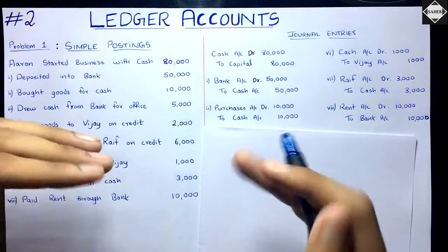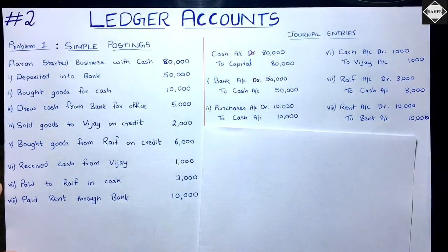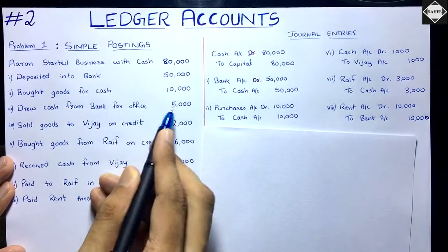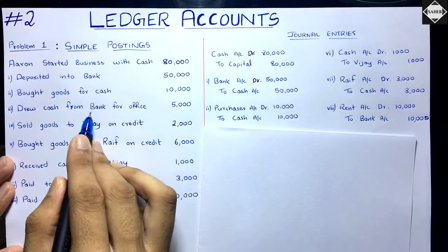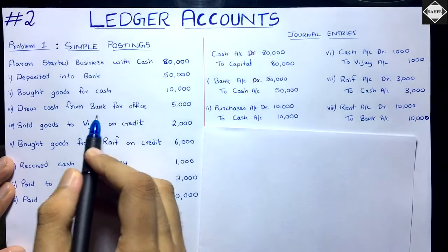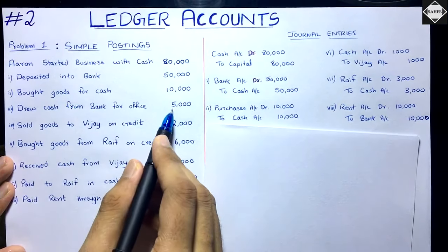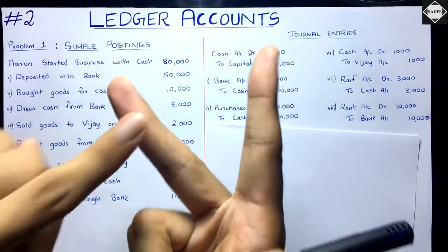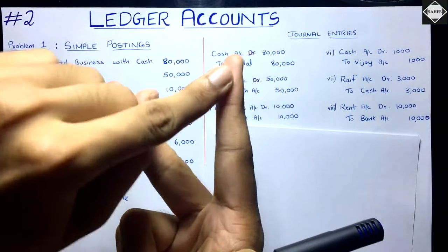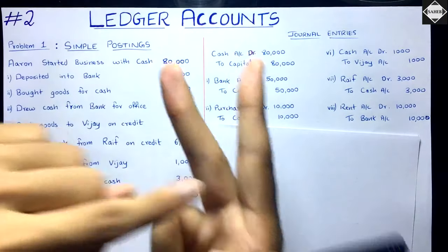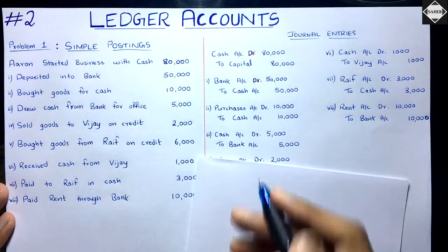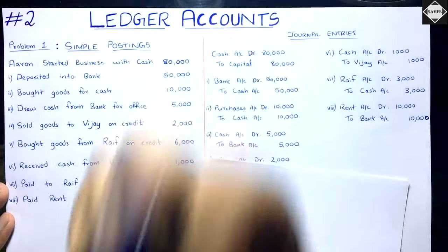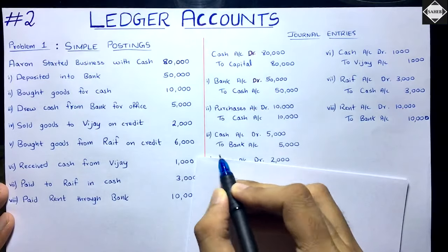Next transaction: drew cash from bank for office use, 5,000. You have withdrawn money from the bank. Cash account is increasing, bank balance is decreasing. So the entry is: Cash Account debit 5,000, to Bank Account 5,000. Cash in hand is increasing from the withdrawal, and bank account is decreasing.